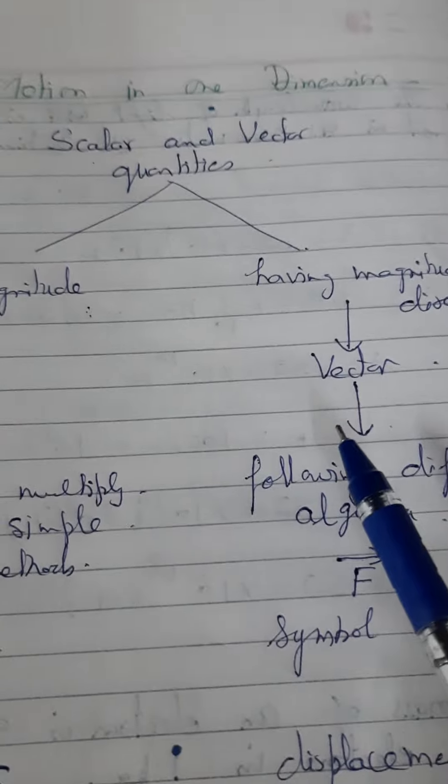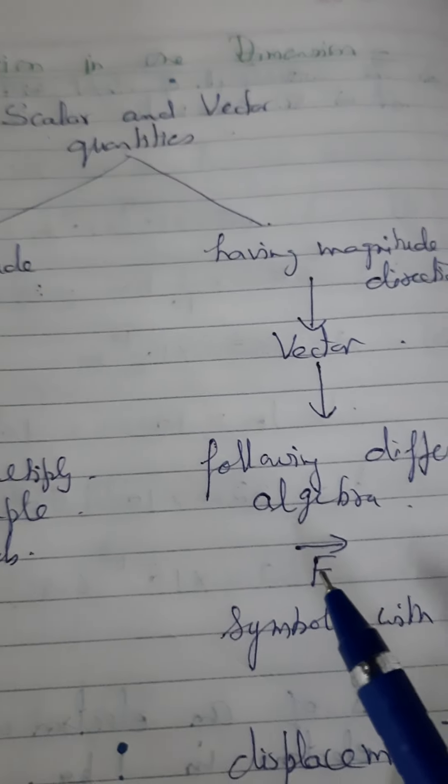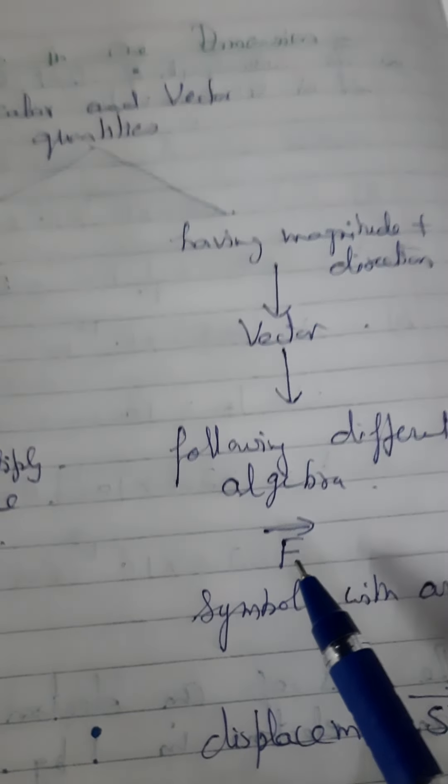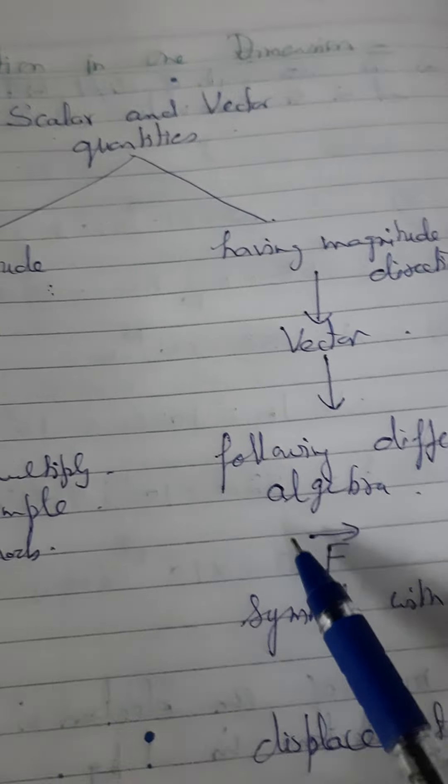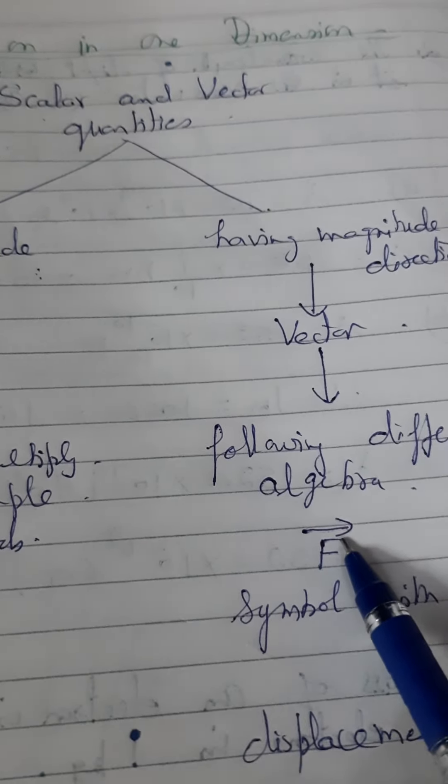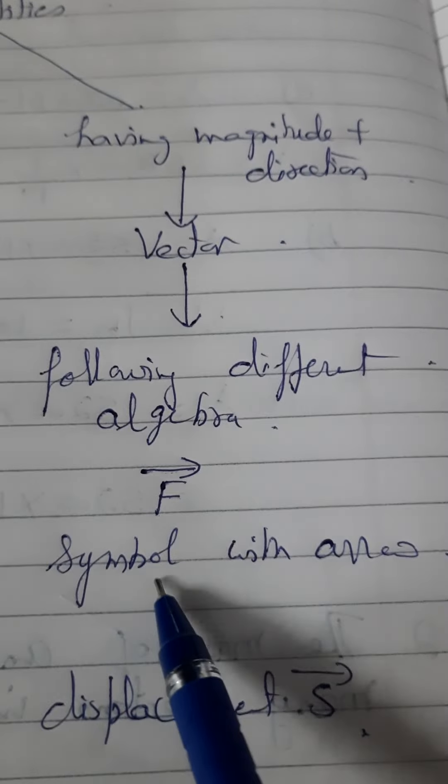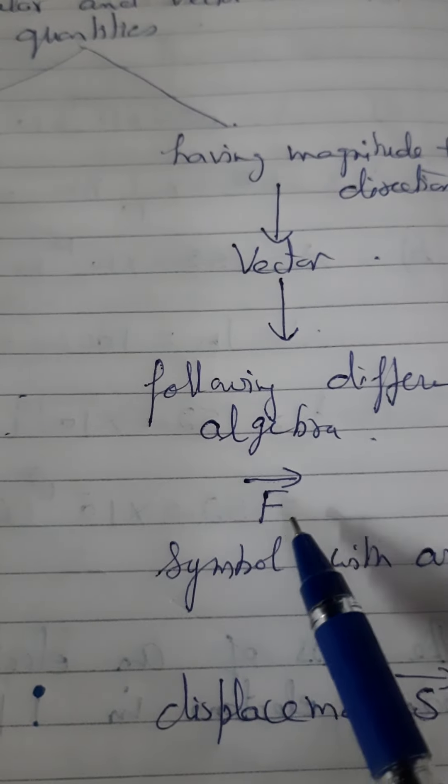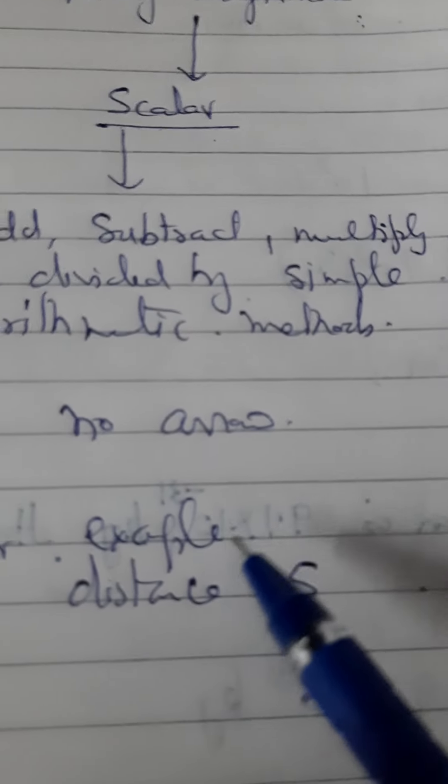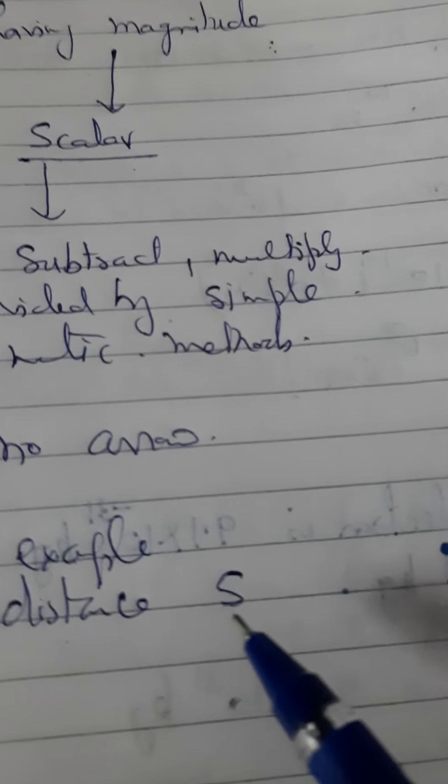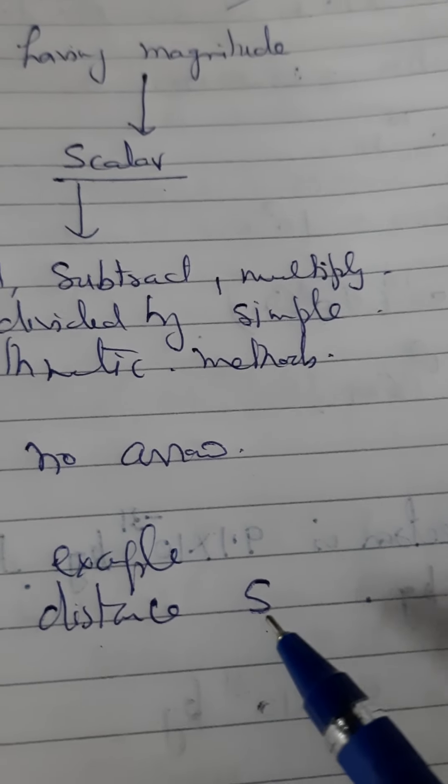What is the vector quantity? If we write force, the symbol is F. But we know force is a vector quantity, so we write an arrow here. When we do it in this way, then we can say this physical quantity is a vector quantity. But when we are writing simple distance, we write only S, which means it is representing a scalar quantity.